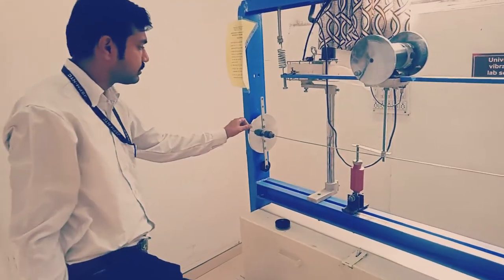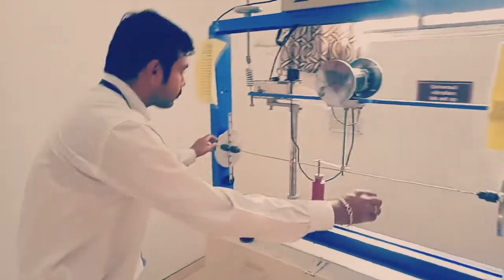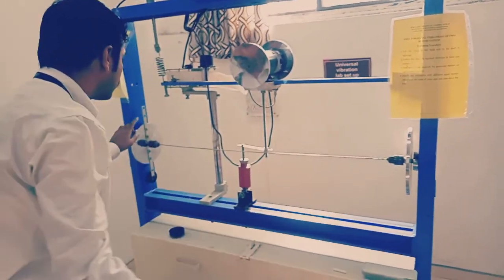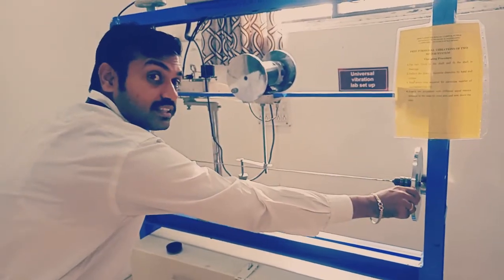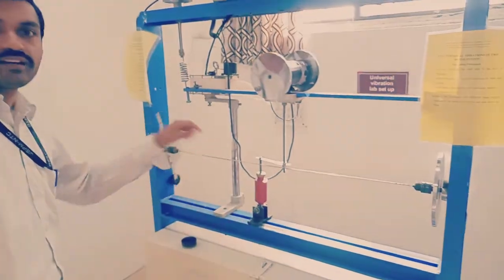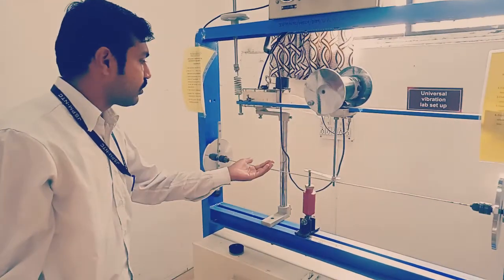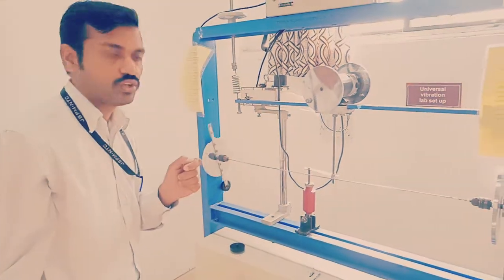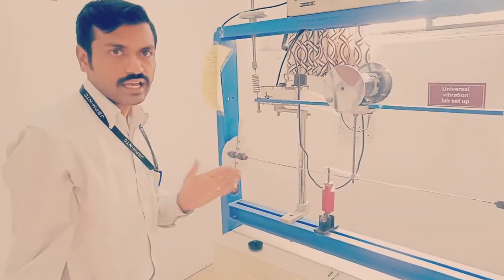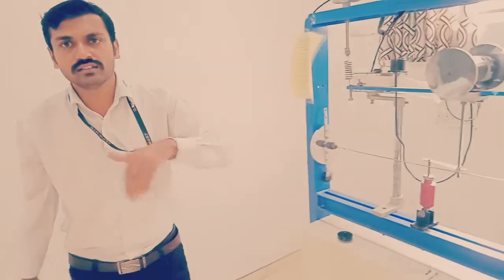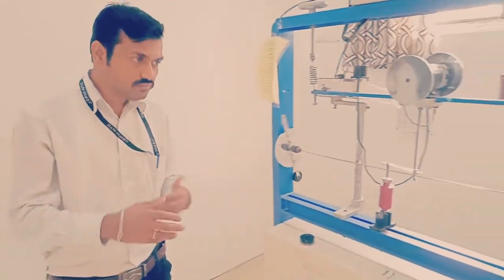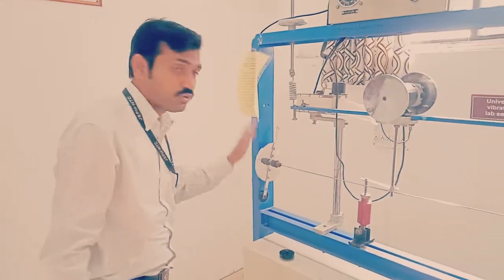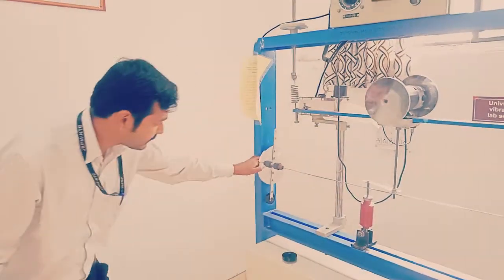After this, we have to rotate these two disks A and B in opposite direction. Then only torsional vibration will take place. For five oscillations, how much time is required? We have to measure with the help of stopwatch. We have to take five such readings and afterwards we have to calculate the theoretical one and compare theoretical time period.